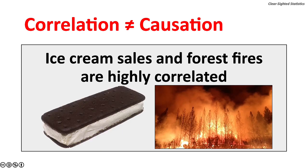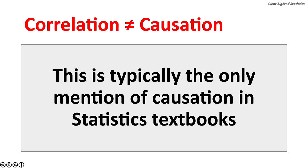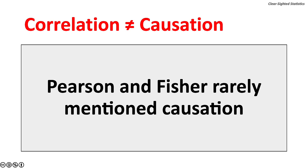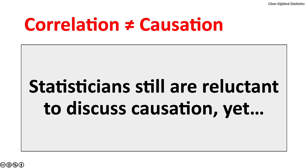Ice cream sales and forest fires are highly correlated — both tend to peak in the summer — but no one believes increased ice cream sales caused forest fires or vice versa. Every statistics textbook cautions students that correlation does not imply causation. Both Carl Pearson and R.A. Fisher rarely mentioned causation. Fisher strongly rejected the notion that smoking cigarettes causes lung cancer. Statisticians still are reluctant to discuss causation.